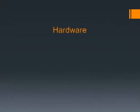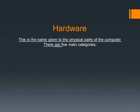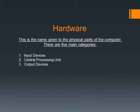Today we are looking at hardware. Hardware is the name given to the physical parts of a computer. There are five main categories of hardware: input devices, the central processing unit, output devices, memory, and storage devices. Those are the five main categories of the computer, and for those doing exams, this is very crucial to remember.